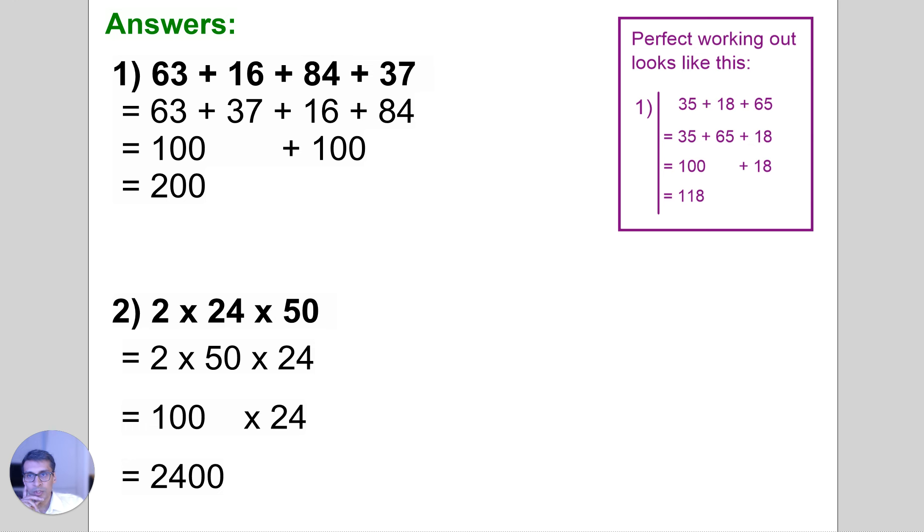If, for example, you did for question one, if you did 84 plus 37 first and 63 plus 16 second, that's still the same thing. You're allowed to do that because of the commutative law, so don't worry if that order is different. The second line should roughly come out similar as to what we've done, so hopefully you found that useful.